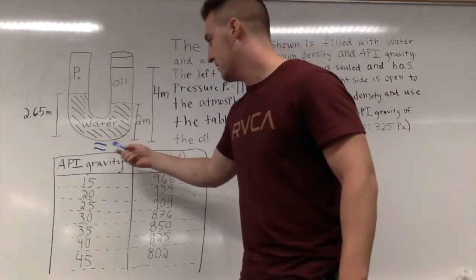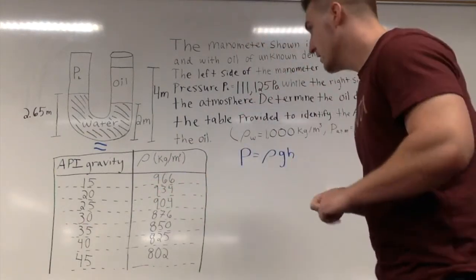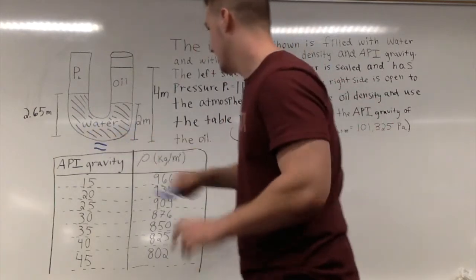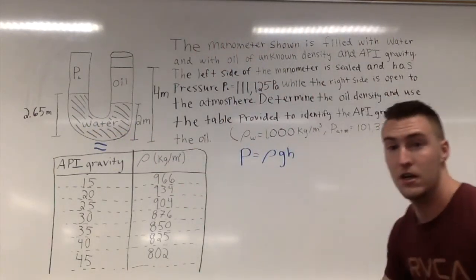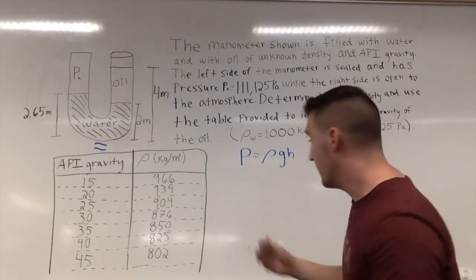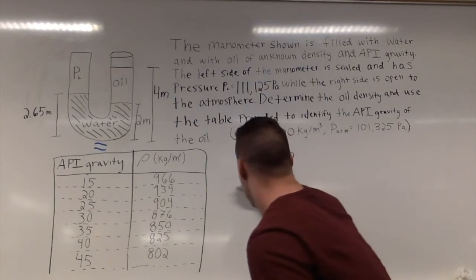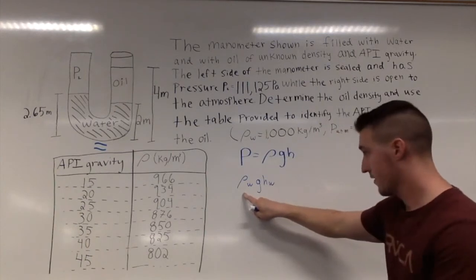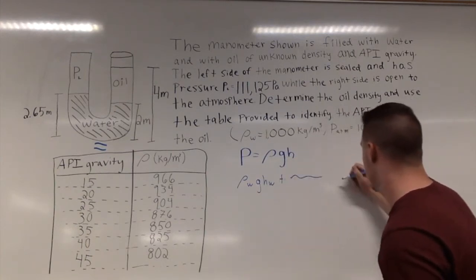Just like when you have terms on both sides of an equal sign, you can cancel them out. Notice that we have water on both sides, and when you're writing out the equation for the pressure on both sides, you're going to have ρgh for water plus some other terms.